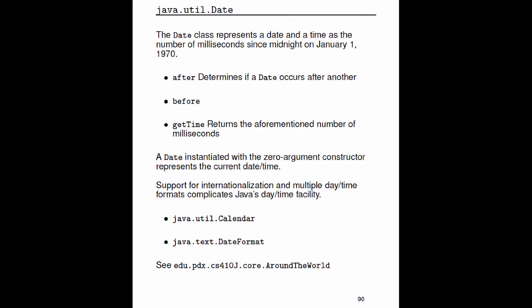We'll conclude with a discussion of date and time handling in Java. There's a class called java.util.Date, and really all a Date is, is a date and time — a timestamp. It's a point in time represented as a number of milliseconds since midnight on January 1st, 1970, also known as the epoch. Date has the ability to compare itself to another date, determine if one date occurs before or after another, and you can get that number of milliseconds as a long using the getTime() method. If you create a Date instance with the zero-argument constructor, it represents the current date and time.